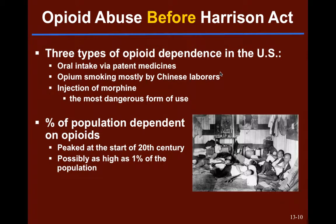Welcome back for the second of our lectures on opioids. We're going to talk about a couple of different time periods in U.S. history and how they relate to opioid regulation and abuse. We'll start with opioid abuse before the Harrison Act — before that major piece of national-level legislation in 1914.